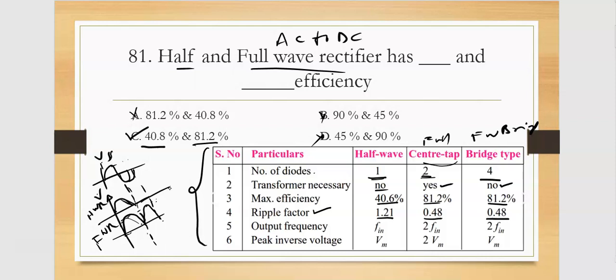Output frequency: you need to read the table and memorize. The half-wave rectifier output frequency is the same as input frequency. The center tap and bridge wave rectifier are double. If input is 50Hz, output frequency is 100Hz. Then the peak inverse voltage (PIV): half-wave rectifier is Vm, center tap is 2Vm, and bridge rectifier is Vm.